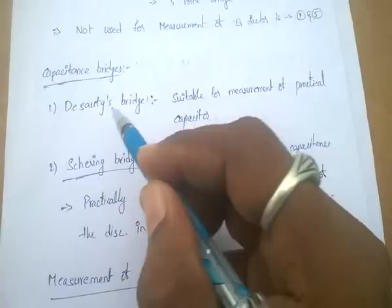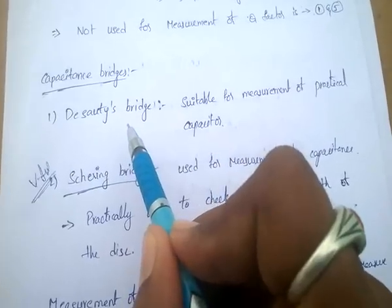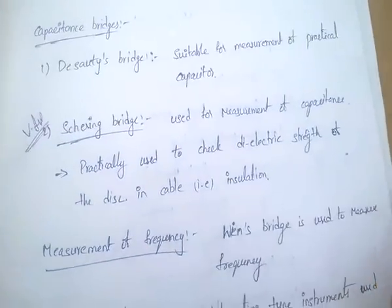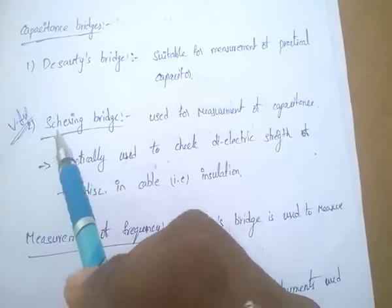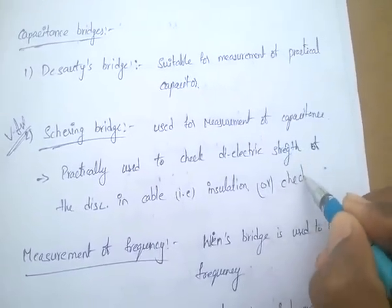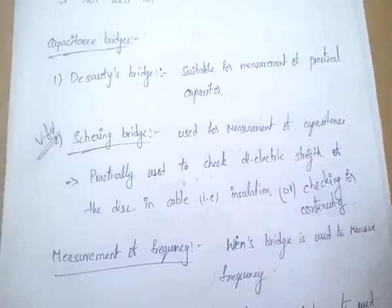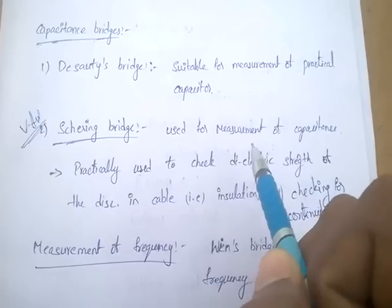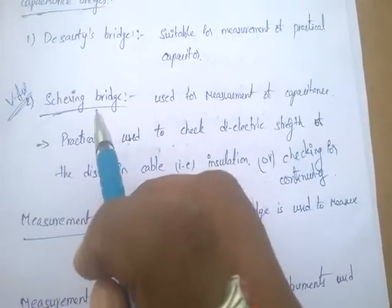Next, capacitance bridges — there are mainly two bridges: Schering bridge and Hay's bridge. Schering bridge is suitable for measurement of practical capacitors. Hay's bridge is used to measure capacitance and also to check dielectric strength of cable or for checking continuity.